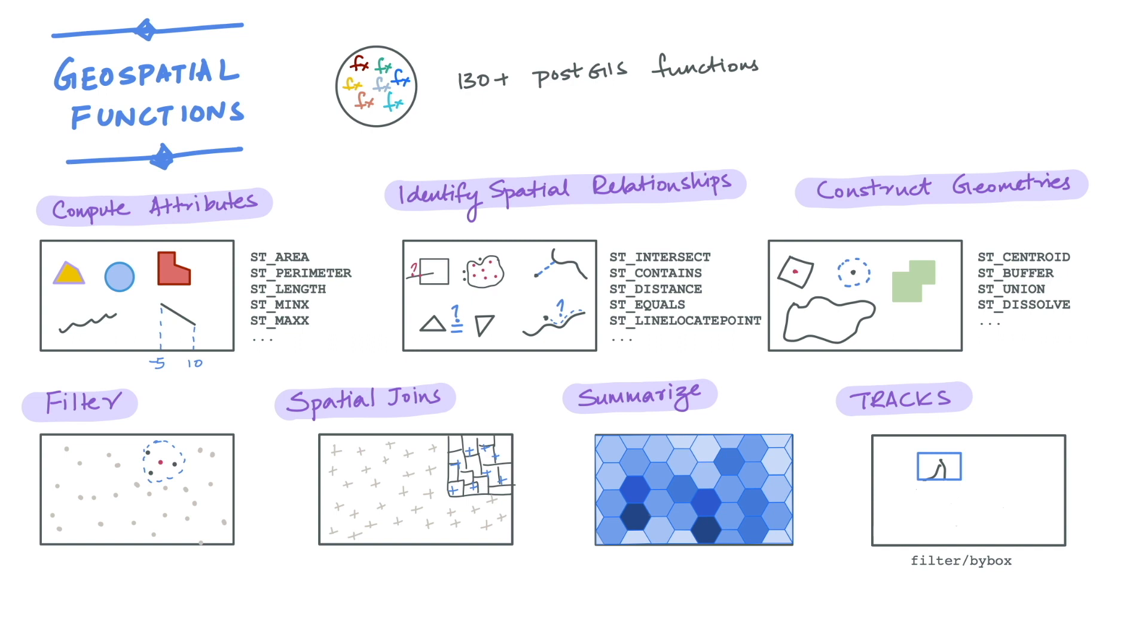The thing to note about both filter by area and by box is that once the tracks are filtered, the resulting view only contains data for the portion of the track that is inside those areas. But in several use cases, we would like to have the data for the entirety of the track and not just the portion inside that area.